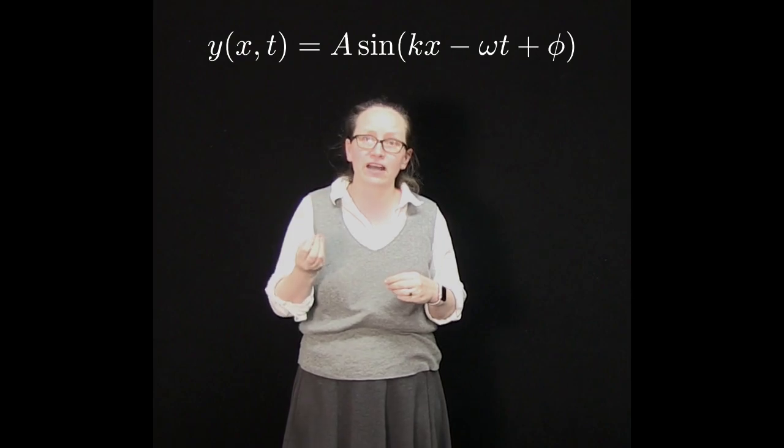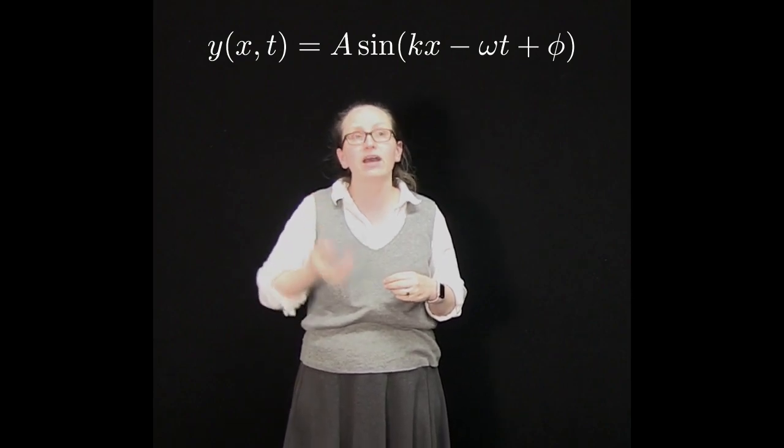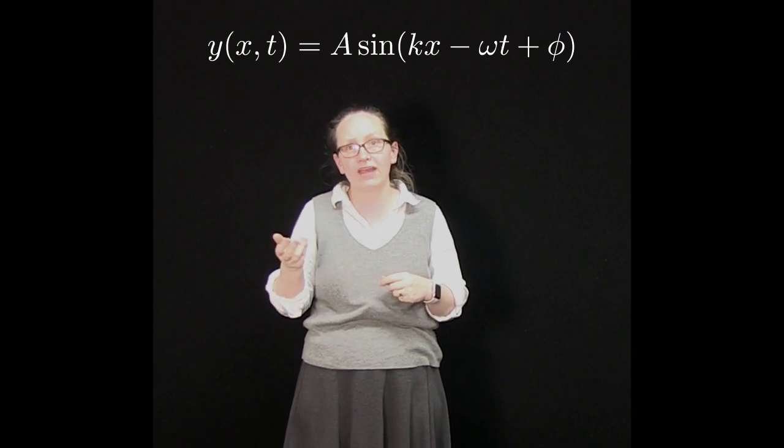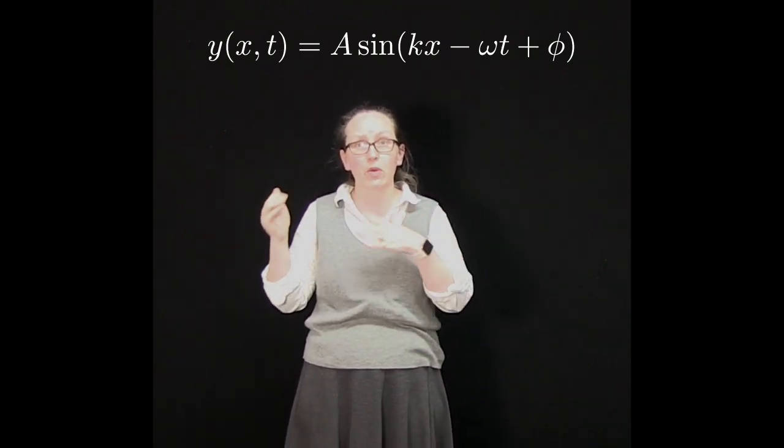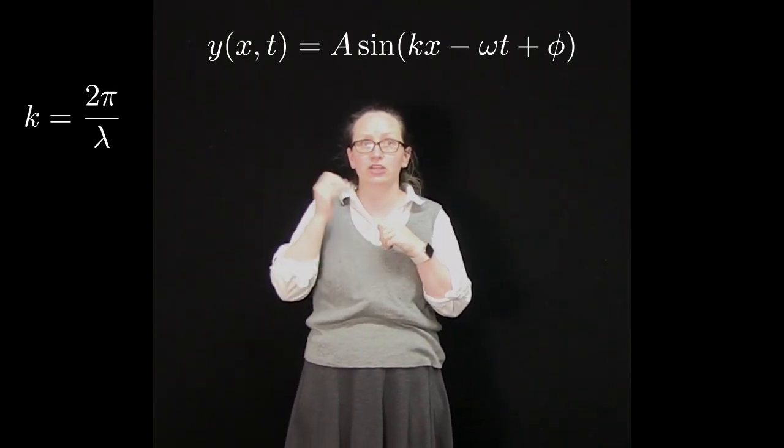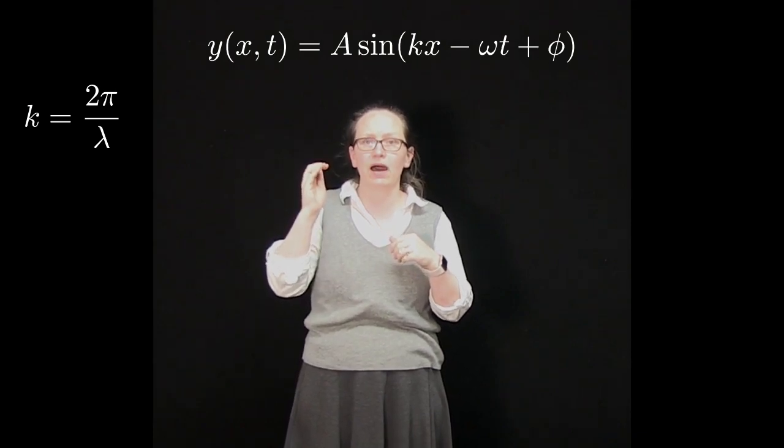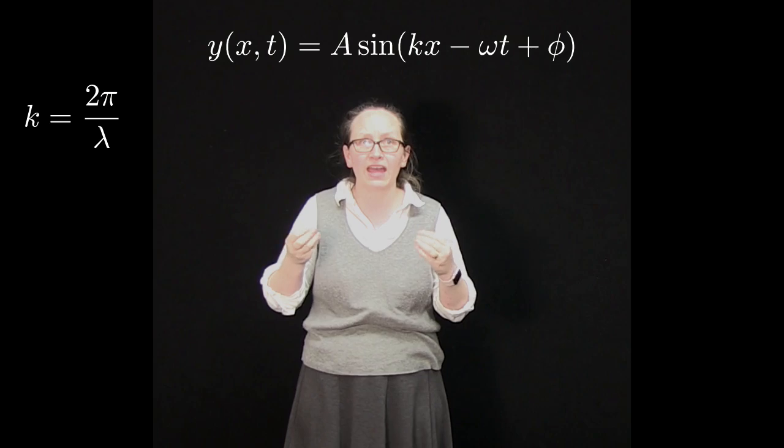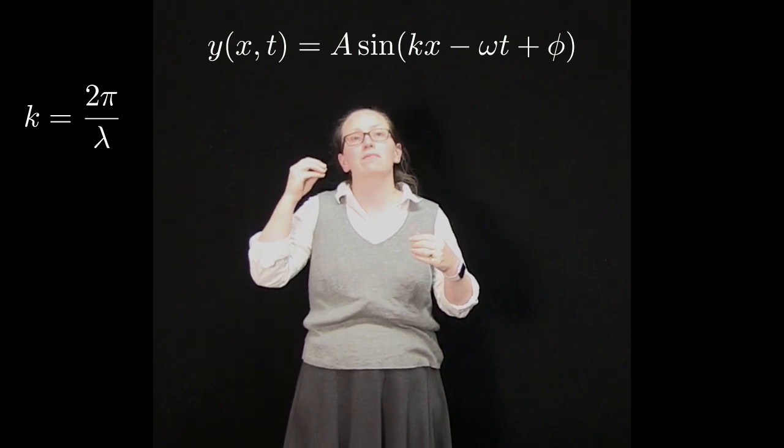A in front of the sine function stands for the amplitude and it is measured in meters. k is known as the wave number and it can be calculated from the wavelength using the equation k = 2π/λ. So the units for k are radians per meter.